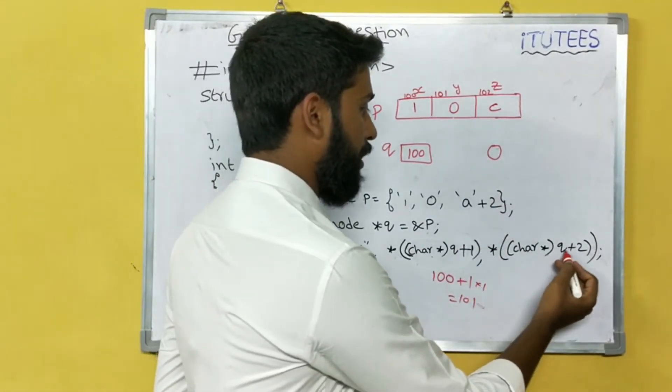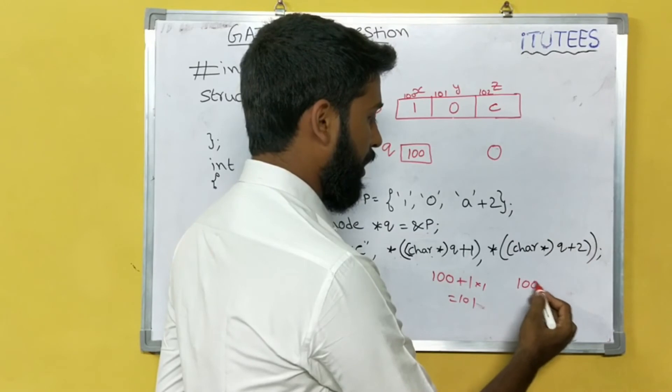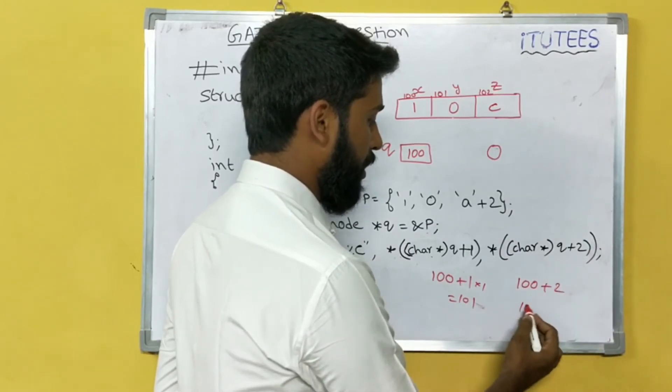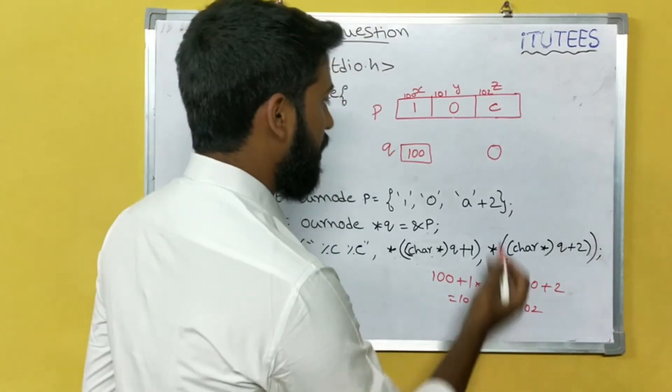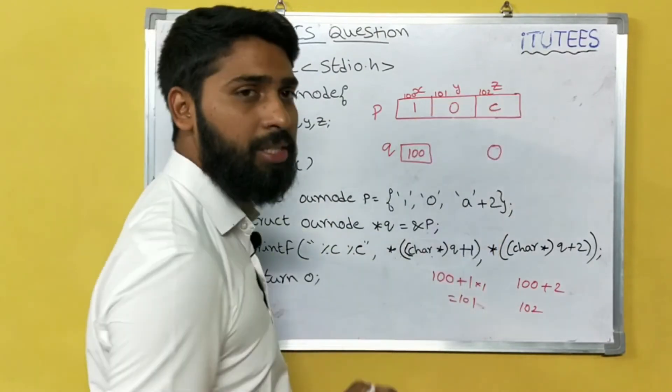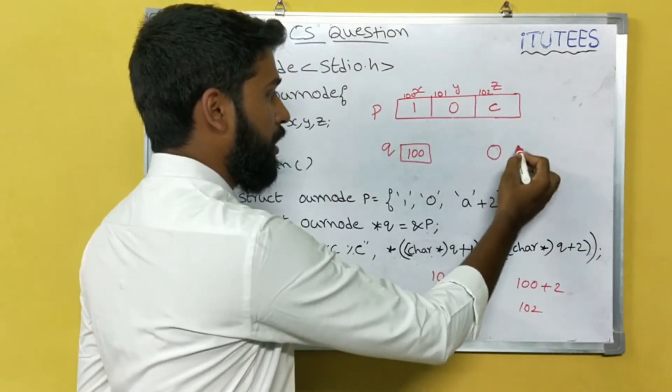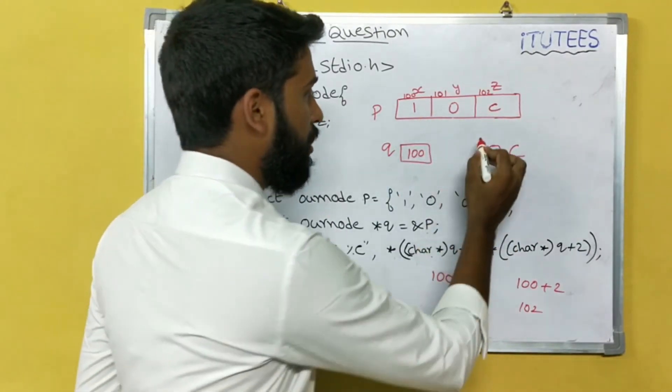So after that, *(q+2). That means q is 100 plus 2, that means 102. What is the content in 102? 'c'. 0, 'c'. So this is the output.